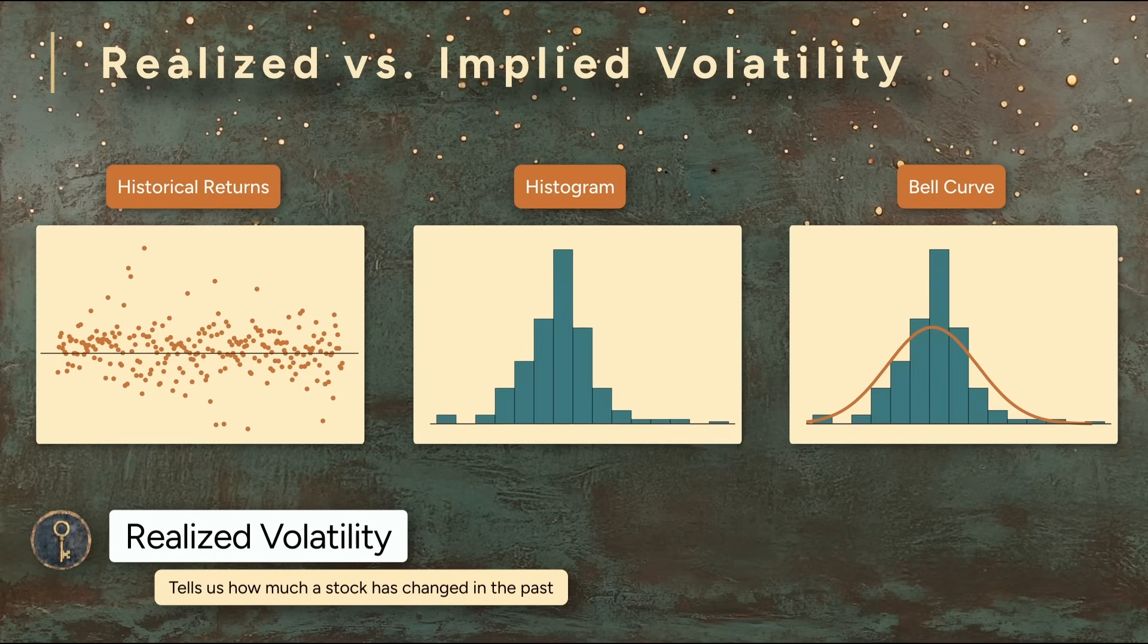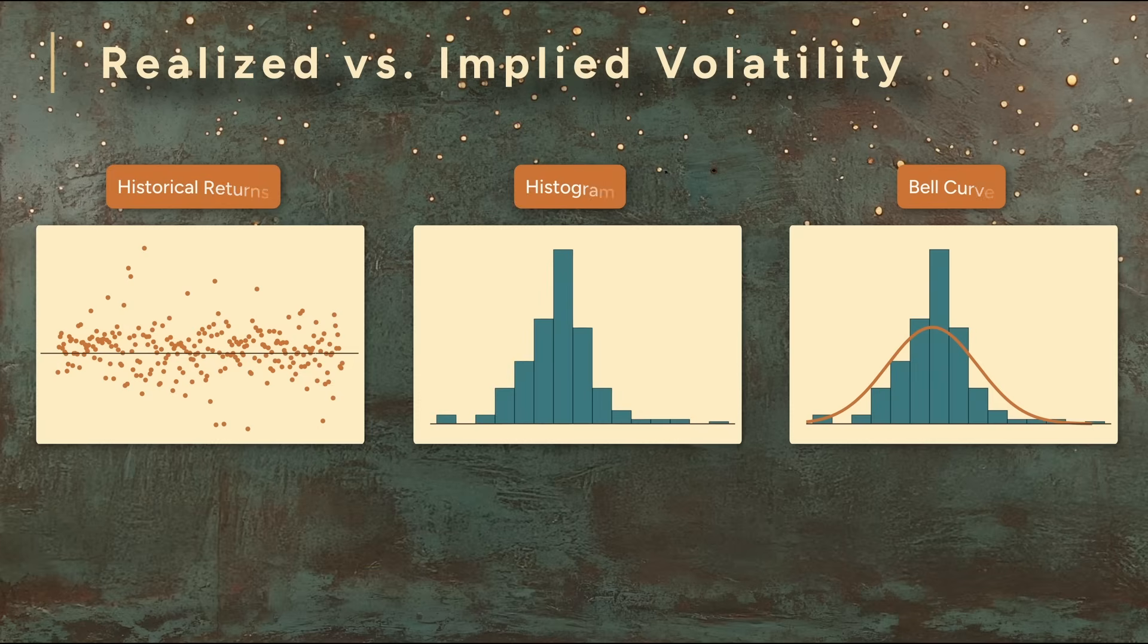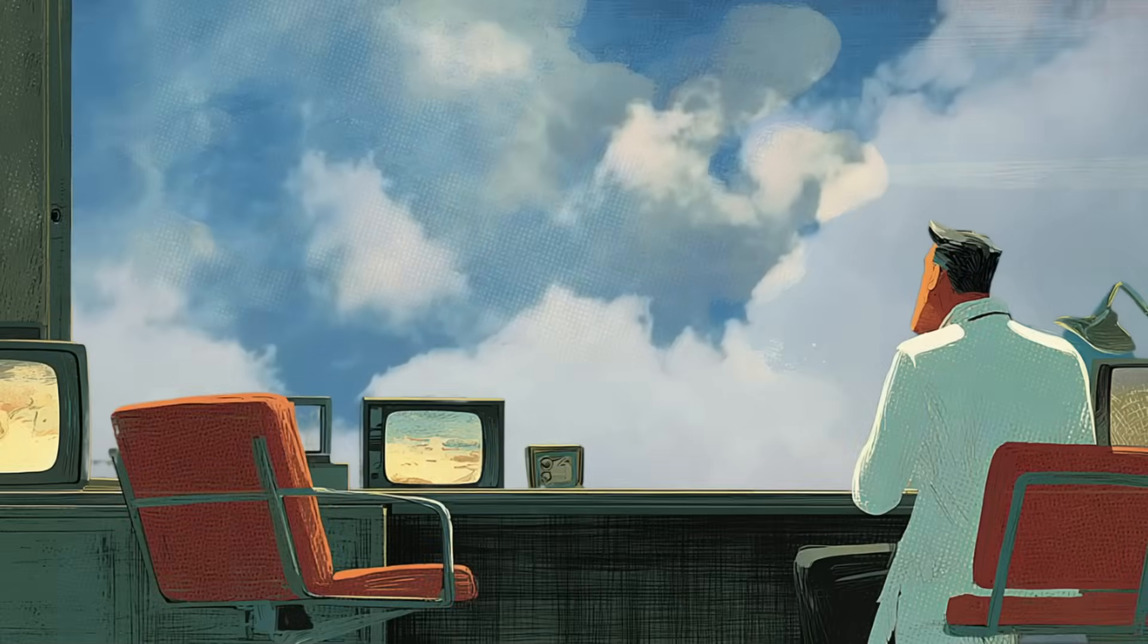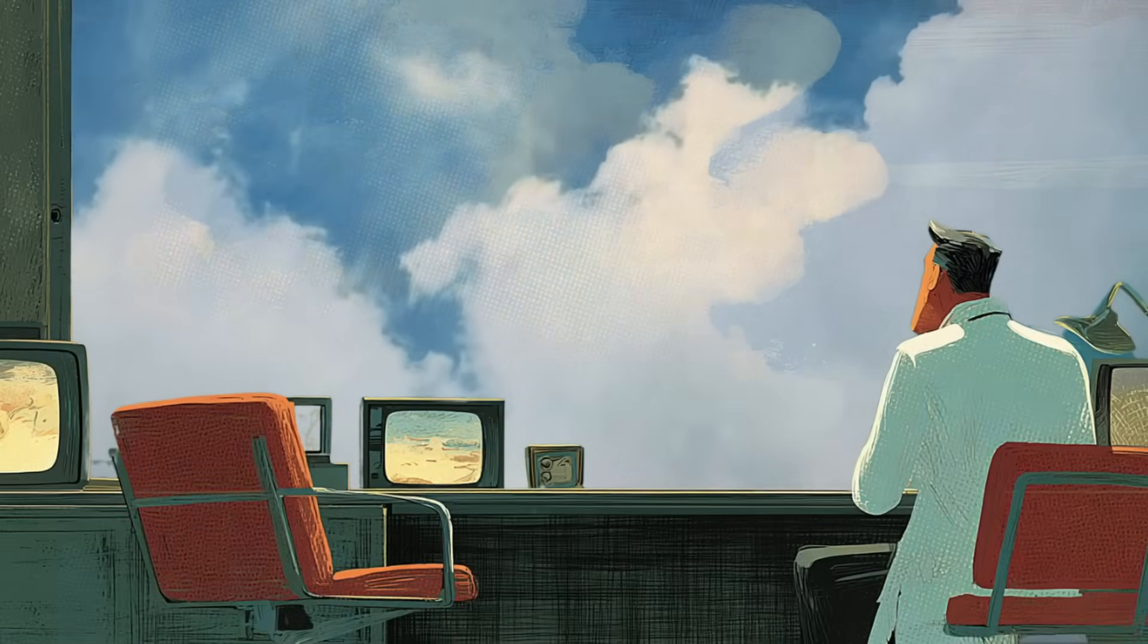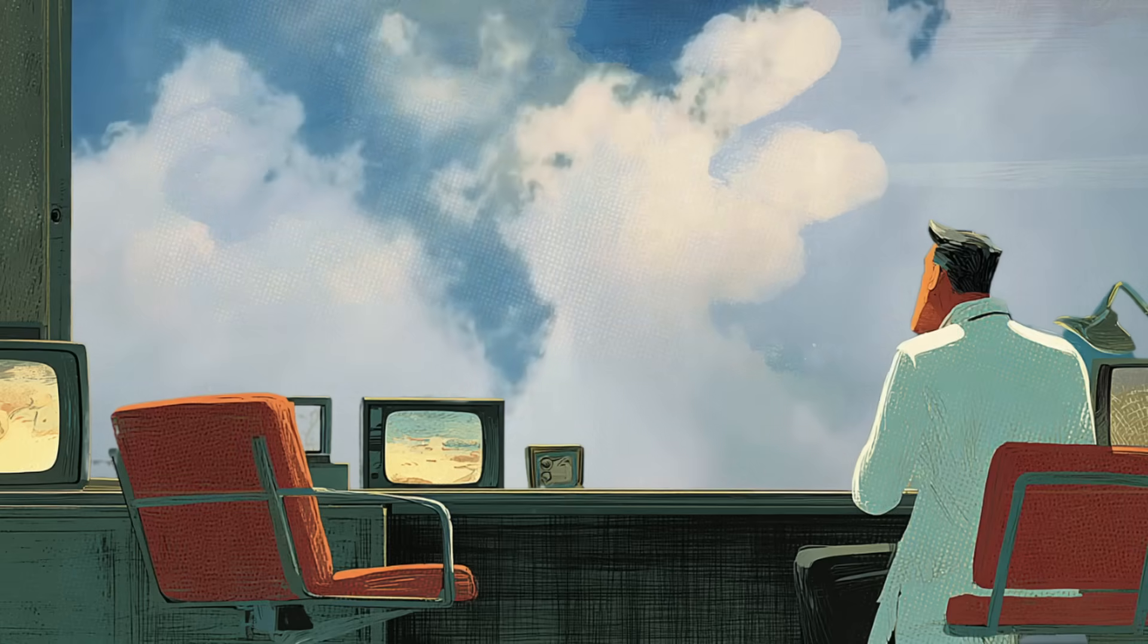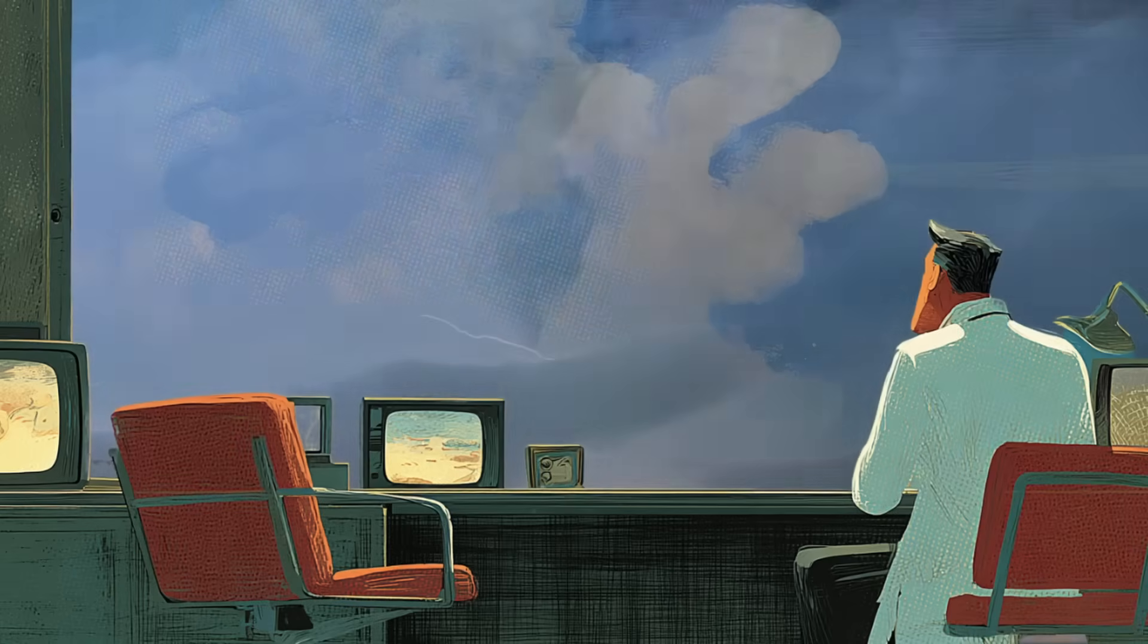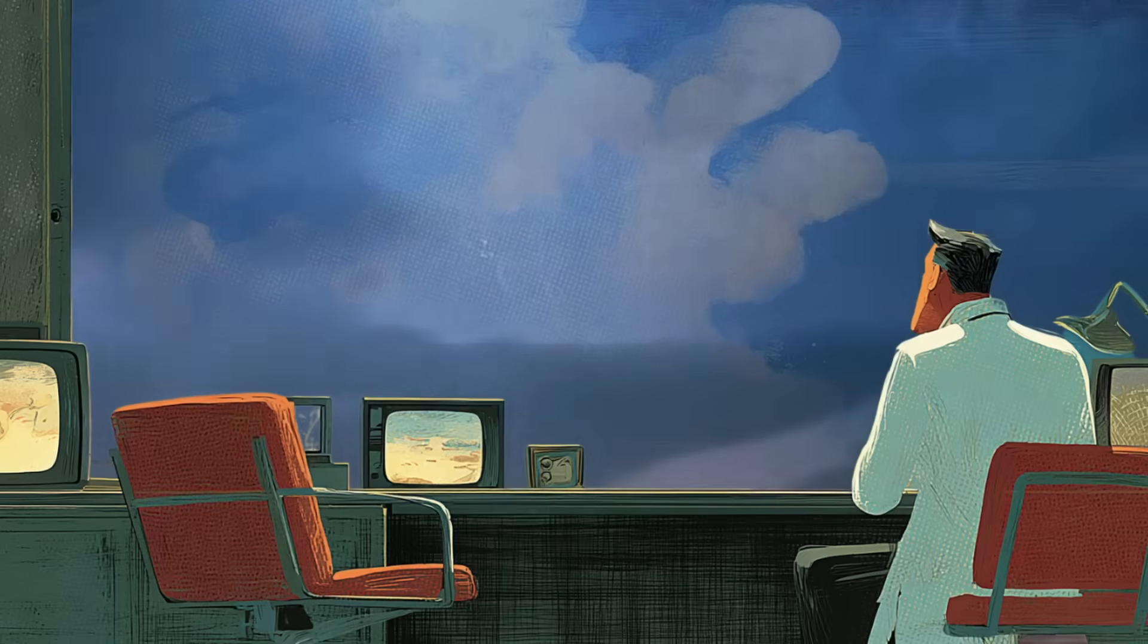But what if we want to know what the market thinks will happen tomorrow? That brings us to implied volatility. Think of it like this: a meteorologist can describe yesterday's weather with perfect accuracy, but their real value is in forecasting tomorrow's storm. The same is true for volatility.